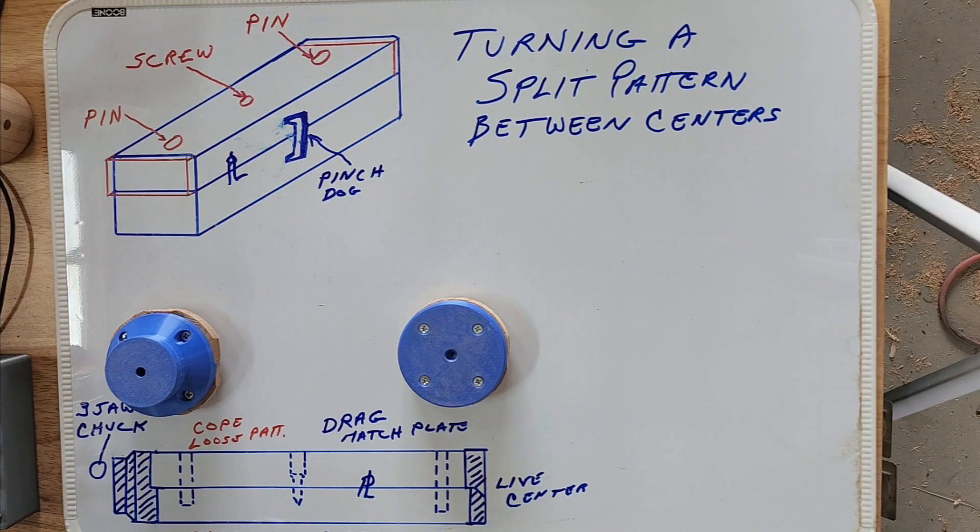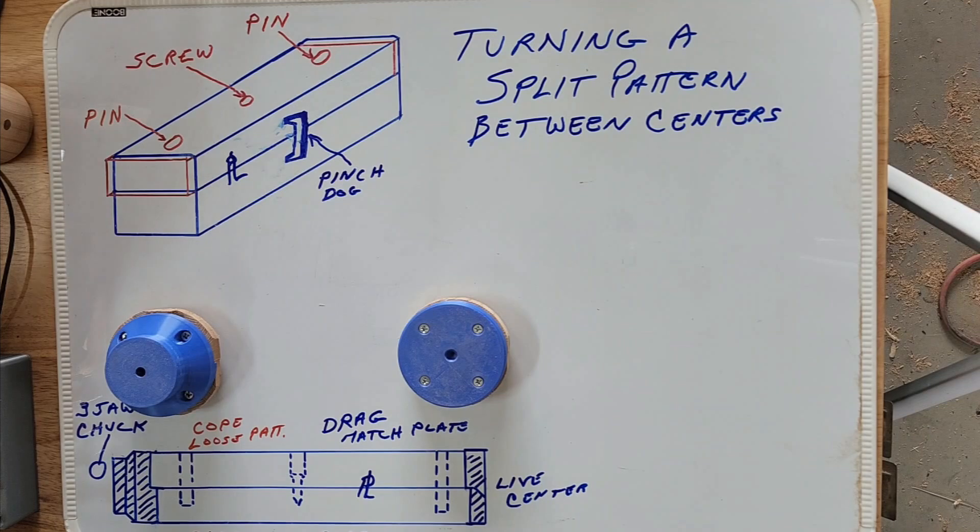Then you'll drill your pinholes because now everything's screwed together good. If you want to make sure this stays down, especially on a long piece, you can put your pinch dogs back in a new location because all that stock is going to be turned off anyway. Then you drill your pinholes. If your stock is long enough you will add a screw hole, or I've also just put a little spot of glue in between—it can be broken out real easy that way.